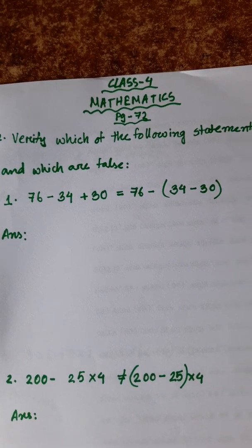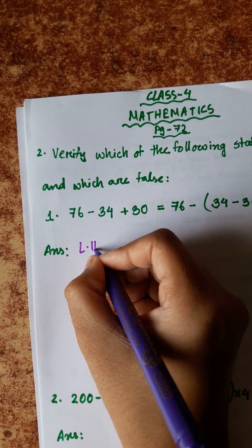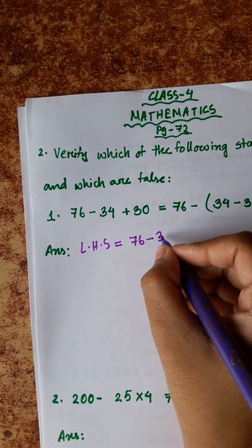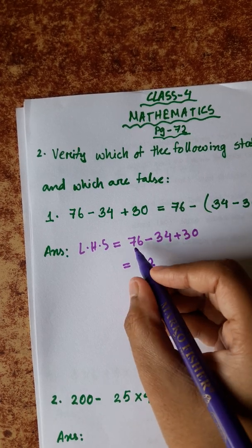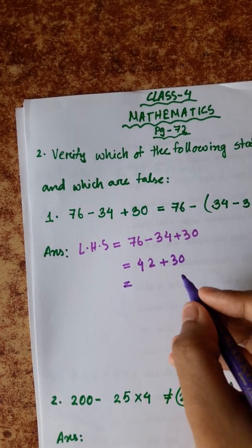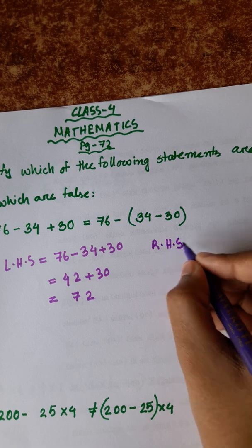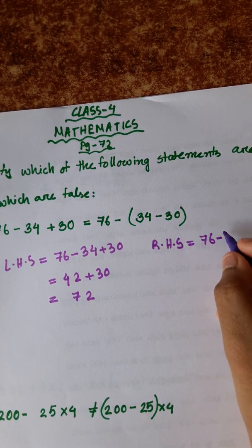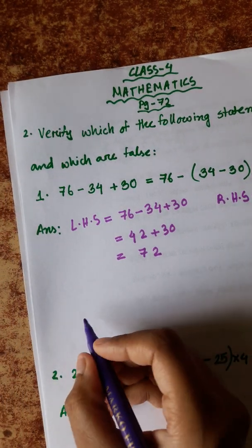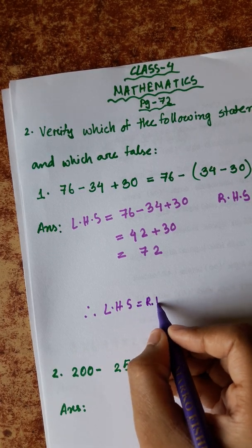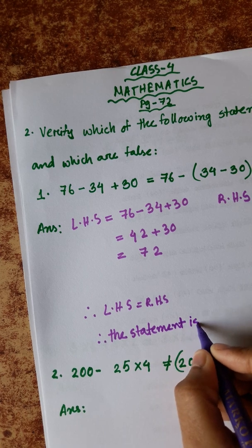Number 2: Verify which of the following statements are true and which are false. Statement 1: 76 minus 34 plus 30. Left hand side equals right hand side — the statement is correct.